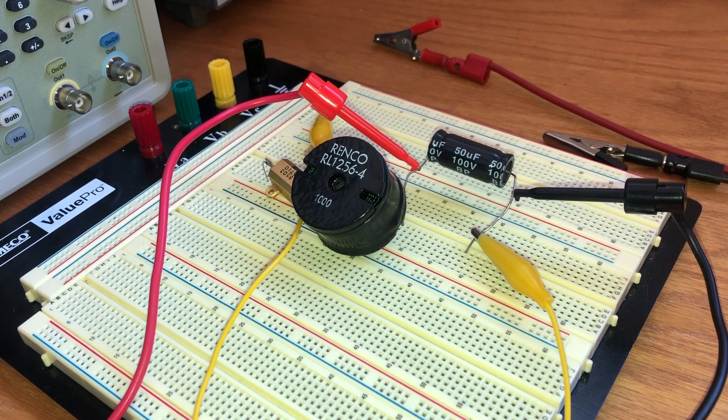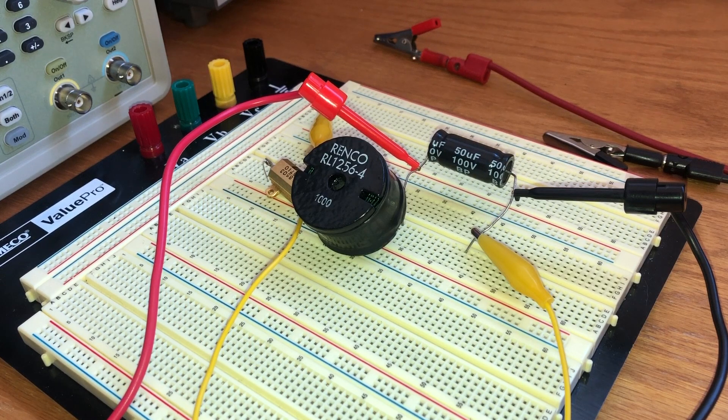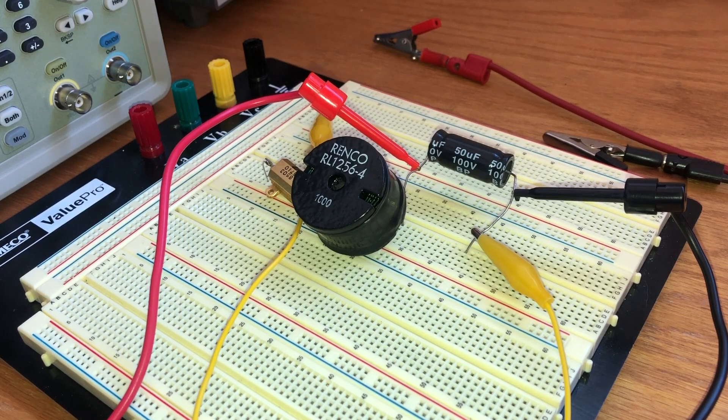The inductor has 1000 written on it, so it's really close to 1000 microhenries or 1 millihenry, and that's a pretty close value. I don't have a convenient way to measure what it is better than that.